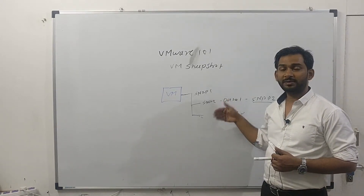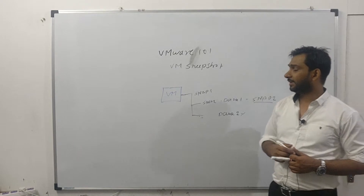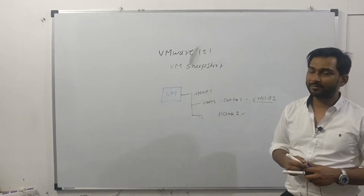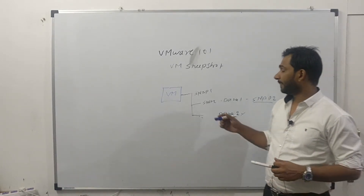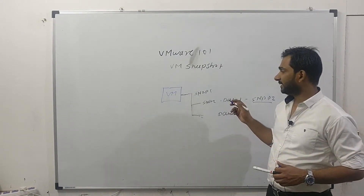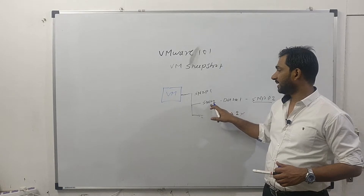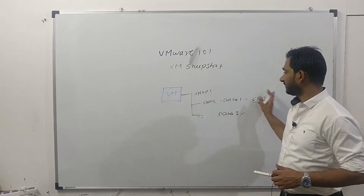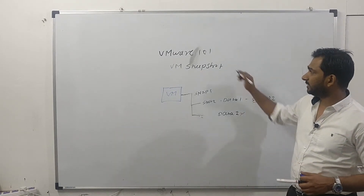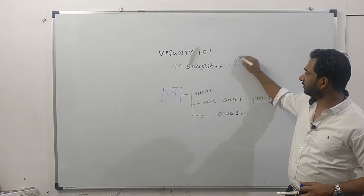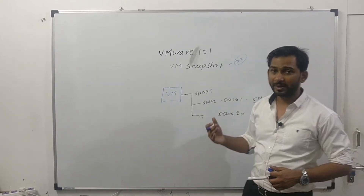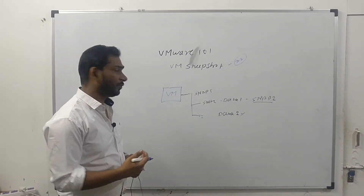When you revert to a snapshot, the state you were running gets overwritten and effectively deleted. This is called the snapshot revert process. There is also a snapshot delete process. VMware supports up to 32 snapshots per virtual machine, and you can revert or go back to any snapshot or state.